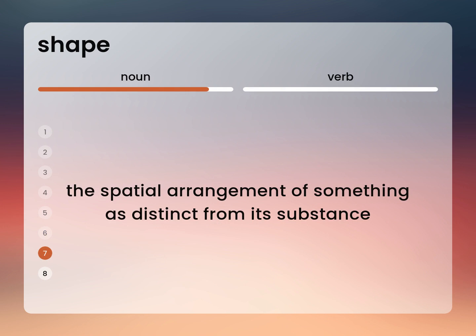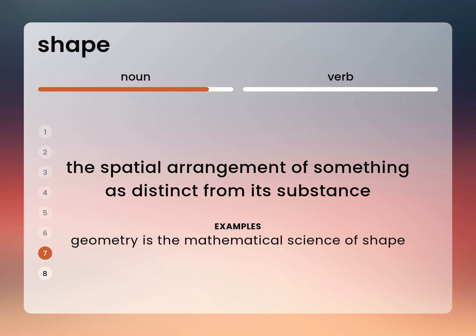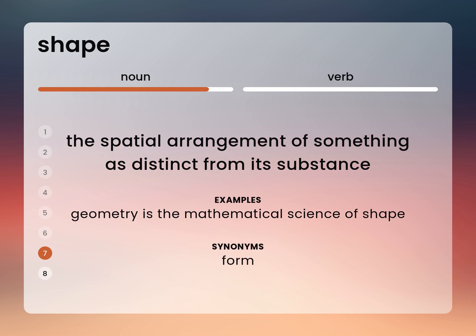The spatial arrangement of something is distinct from its substance. Geometry is the mathematical science of shape. Form.